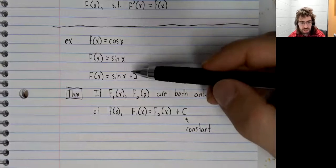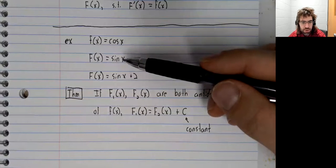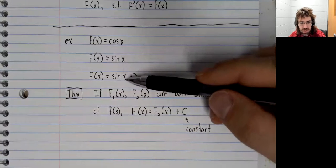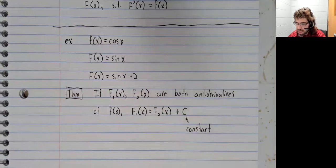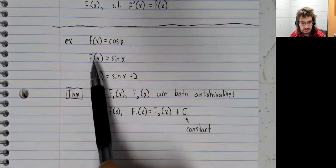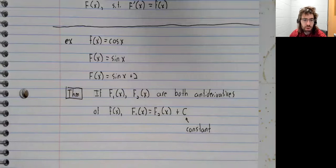You'll see that up here are two antiderivatives: the sine of x and the sine of x plus two. And indeed, one of these antiderivatives is just the other antiderivative plus a number.